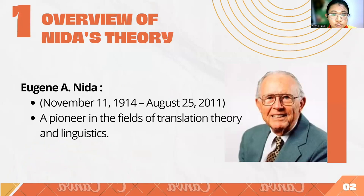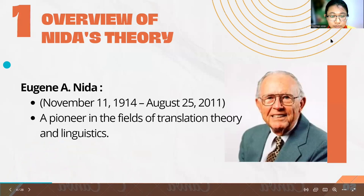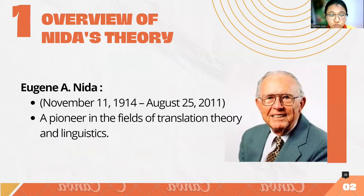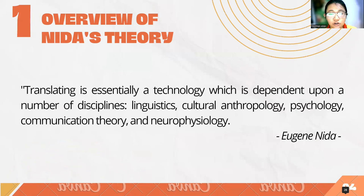Eugene Nida was an American linguist who developed the Dynamic Equivalence Bible Translation Theory and one of the founders of the modern discipline of translation studies.